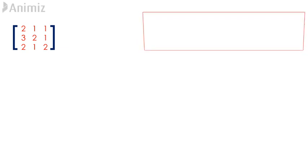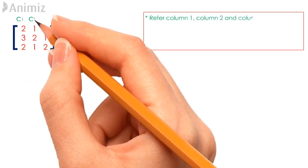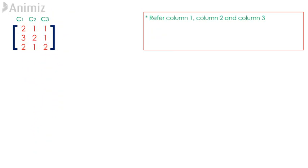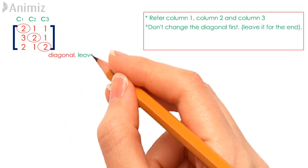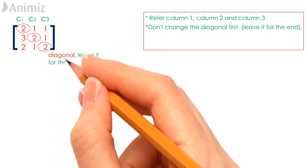To find the inverse of P by using elementary row operations (ERO), we are going to use a technique which will enable us to execute the process on a step-by-step basis. Bear in mind these two essential things: first, refer to the respective columns going from column 1, column 2, and column 3 when creating equations for the new rows. Second, leave the procedure involving matrix diagonals for the end.